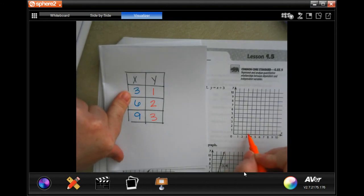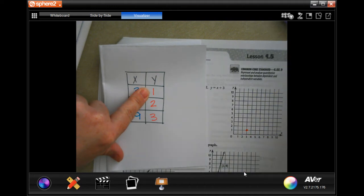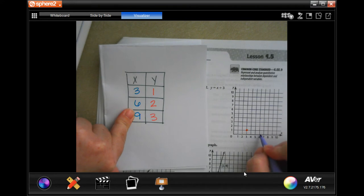Over three and then we're going to go up one, that's your first point. Your second point is you're going to go over to six and you're going to go up to two, that's your second point.